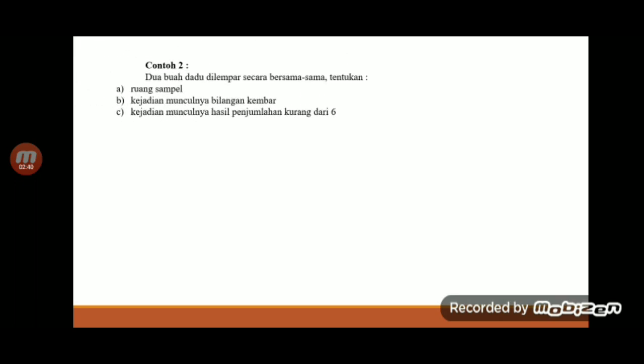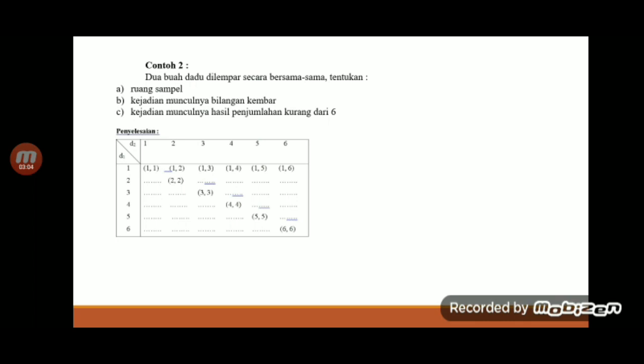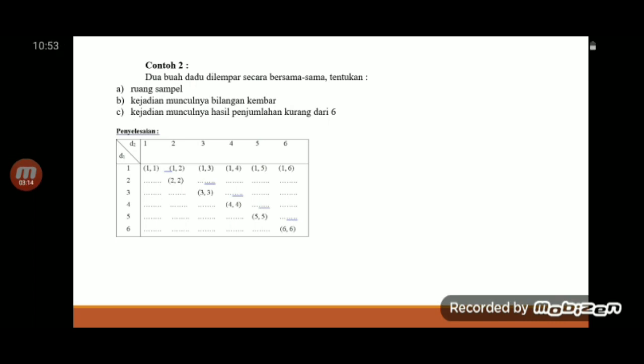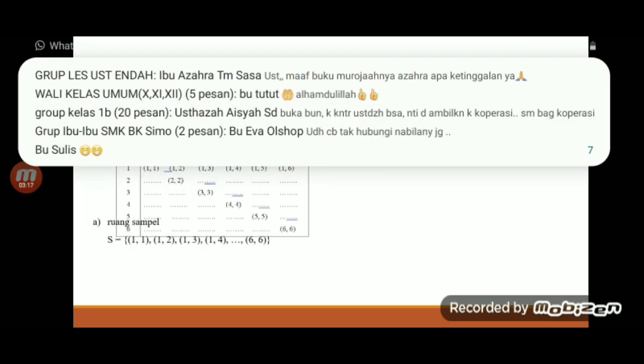Dua buah dadu dilempar secara bersama-sama. Tentukan yang pertama adalah ruang sampel, yang B kejadian munculnya bilangan kembar, yang C kejadian munculnya hasil penjumlahan kurang dari 6. Berarti untuk menyelesaikannya, kalian buat tabel seperti gambar di sini. Berarti dadu yang pertama, itu yang kebawah, 1, 2, 3, 4, 5, 6. Di balik, sebenarnya sama ya. Terus dadu yang kedua adalah yang mendatar. Juga 1, 2, 3, 4, 5, 6.